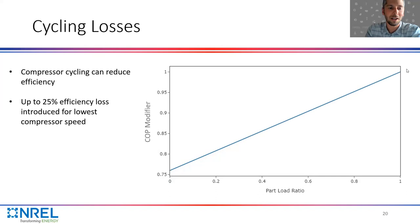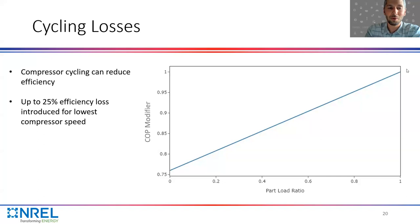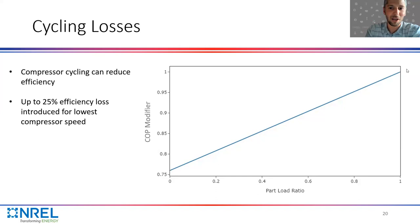Cycling losses represent lost efficiency when the compressor turns on and off frequently. We introduce up to 25% efficiency loss based on the part load ratio. In EnergyPlus, there's a simulation time step, and if the average load during that time step is less than the rated compressor capacity, we apply a part load ratio. If the load is only 10% of the rated compressor load, we would apply about a 75% factor, losing about 25% of the efficiency to reflect the cycling.